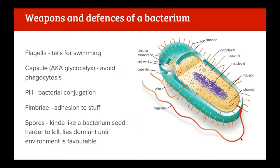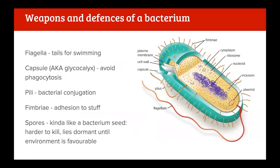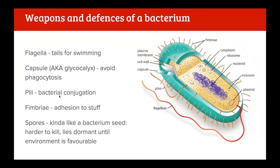Then we've got flagella. Sometimes bacteria have more than one. They're very distinct from eukaryotic flagella because they're made of flagellin instead of tubulin. In eukaryotic cells we have the nine-plus-two arrangement of microtubules made of tubulin proteins. Bacteria don't have that arrangement, meaning flagella can be a target for antimicrobials. Then we have pili and fimbriae, which are similar in structure but do different things. Fimbriae are numerous and designed to stick to things; pili are designed to stick to things as well but in a different way.